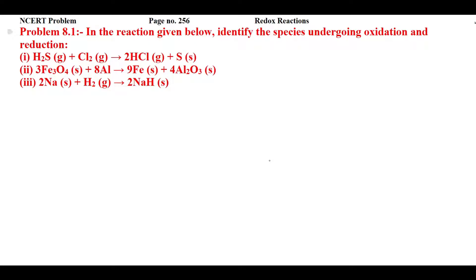This is NCERT problem 8.1 from page number 256 on redox reactions. In the reaction given below, identify the species undergoing oxidation and reduction. In this question you are having three problems and you have to find the species who are undergoing oxidation and reduction.